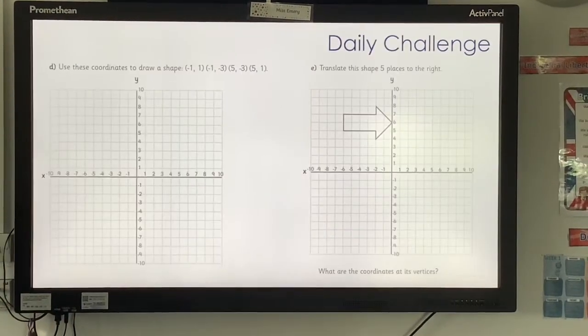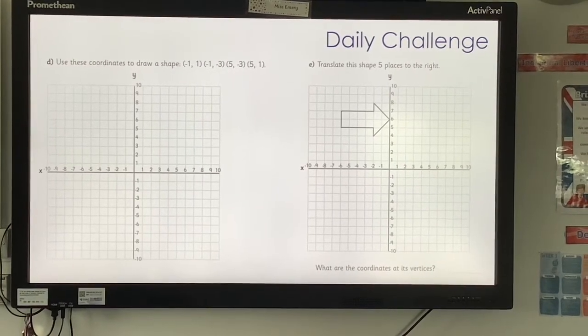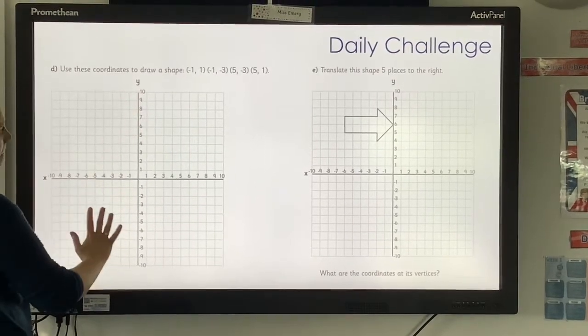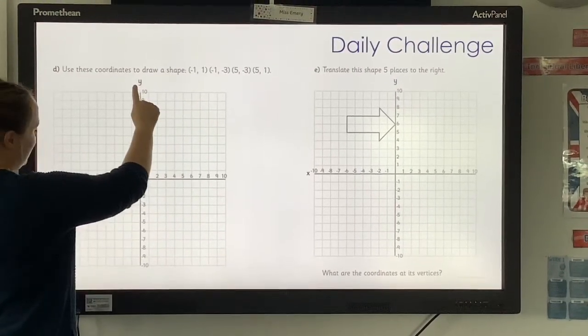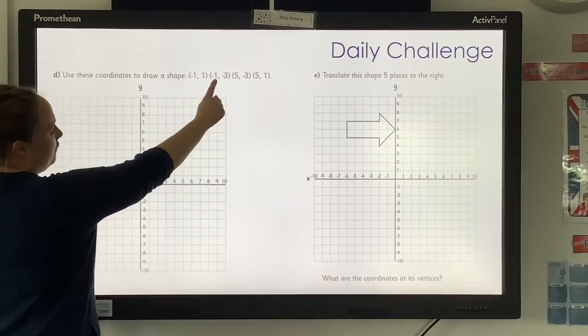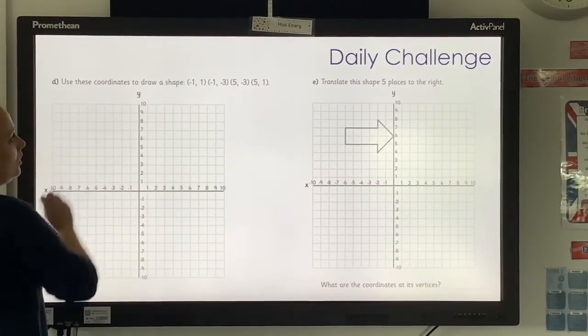So today's problem. Use these coordinates to draw a shape. So you've got your four quadrant grid here. You've got your y-axis and your x-axis. They've been marked for you. And then you've been given four coordinates. So you need to plot those carefully onto the grid.